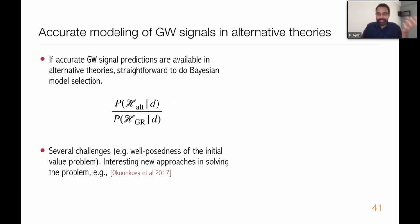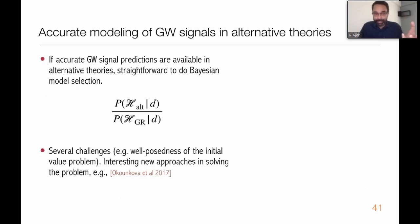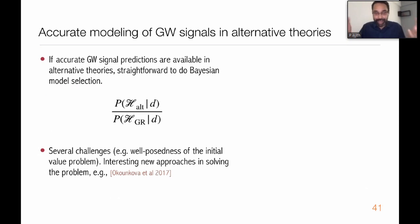Finally, if we have accurate models of gravitational waves in alternative theories, one could make straightforward comparisons using Bayesian model selection - computing the posterior probability of the alternative theory versus the posterior probability of GR, which is called the Bayesian odds ratio. Currently this is limited by the fact that we do not have accurate predictions of gravitational waves in many alternative theories. But theorists are working on this problem, and there are very interesting ideas coming out to solve the two-body problem in alternative theories.